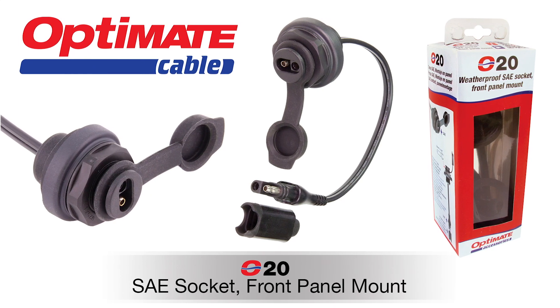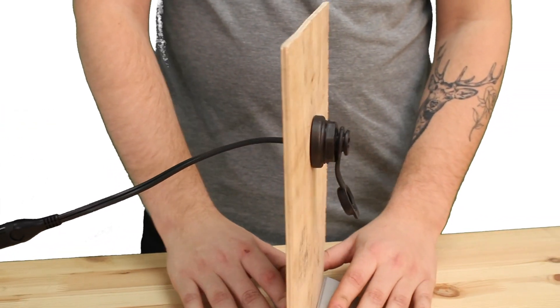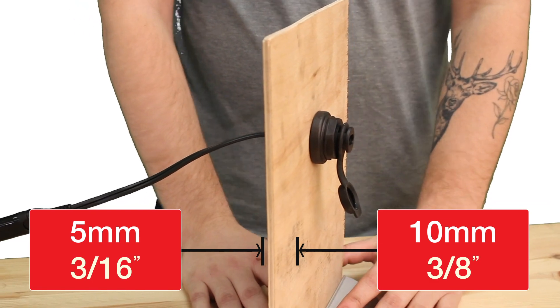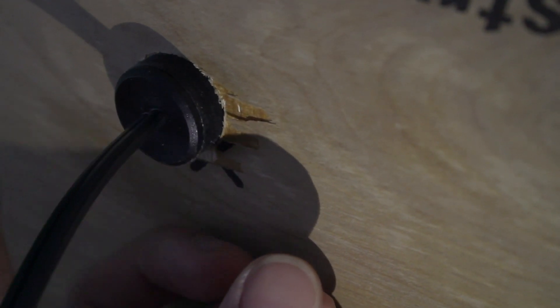The O20 panel mount SAE socket is designed for installation from the front of the panel, ideal for when it is difficult to reach around the back of the panel.